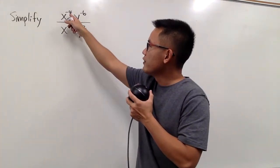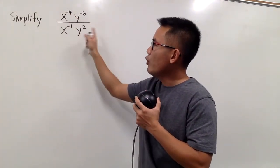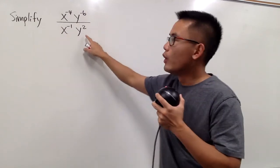We'll simplify this right here. We have x to the negative 4, y to the negative 6, over x to the negative 1, y squared.